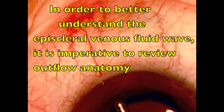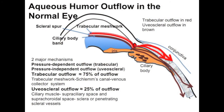In order to better understand the significance of the Episcleral Venous Fluid Wave, it is imperative to review aqueous outflow anatomy. There are two paths for aqueous to exit the eye: the pressure-dependent trabecular route, seen in red, and the pressure-independent uveoscleral route, in brown.